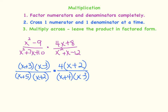There you have it — we just did step number 1, and that probably is the step that will take the longest. Now let's look at the second step, which says to cross out one numerator and one denominator at a time. I look at my numerator and I see x plus 3. I'm going to look at my denominators — do I see any x plus 3s? No, I don't. So let's move to the next binomial in the numerator, x minus 3. And if I look down here in the denominator, I do see x minus 3. So I can cross those out because x minus 3 divided by x minus 3 equals 1.